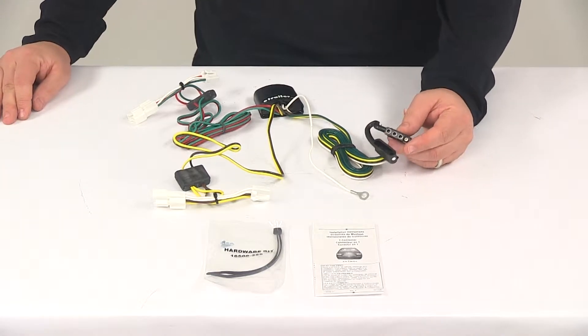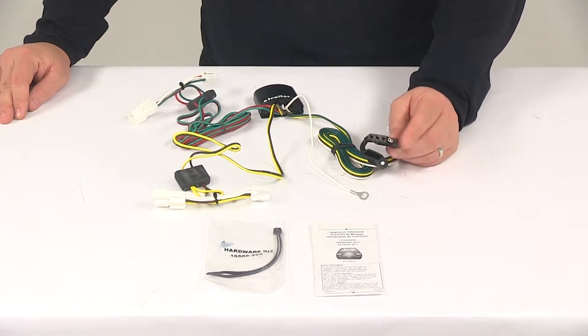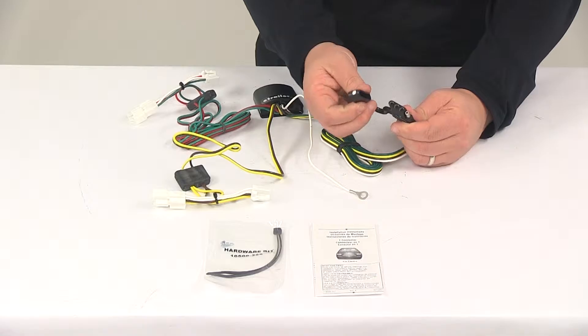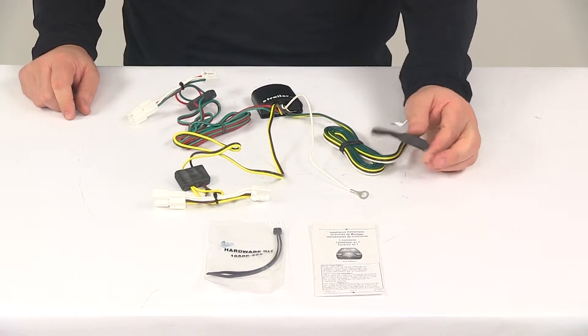It provides a 4-way flat trailer connector at the back of the vehicle to power your trailer signal lights. This is compatible with 5-pole, 6-pole, and 7-pole adapters sold separately, and comes with a dust cap for the 4-way flat connector. That way you can cover up the connection points when the plug is not being used.